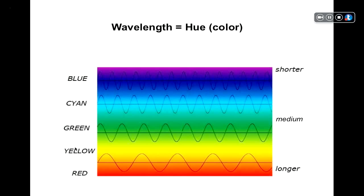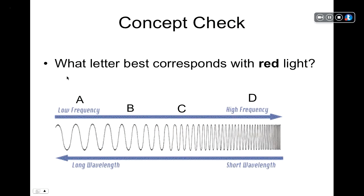The properties of light and their perception: wavelength, amplitude, and purity are each associated with particular perceptual phenomena. Wavelength determines color, or hue. Light of relatively short wavelengths is perceived as blue, and light of longer wavelengths is perceived as red, with everything in between. Concept check: what letter best corresponds with red light? The answer is A — the longer the wavelength, the more red the light is going to be.